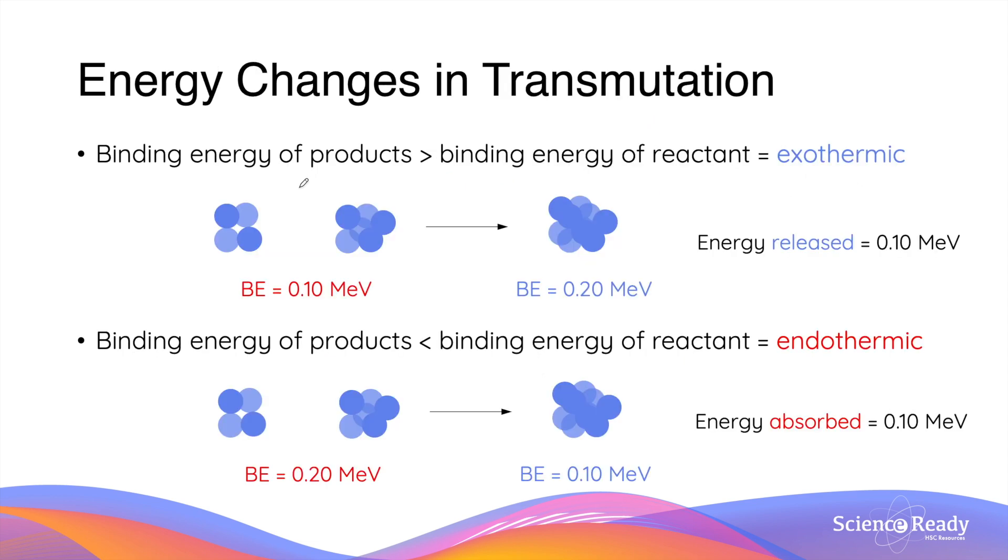For any type of transmutation processes, whether it's radioactive decay, nuclear fusion, or nuclear fission, the binding energies of reactants and products are always different. When the binding energy of the products is greater than the reactants, the transmutation is said to be exothermic, which means it releases energy.